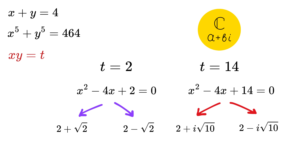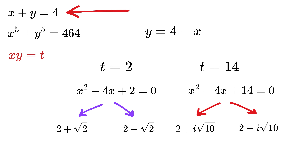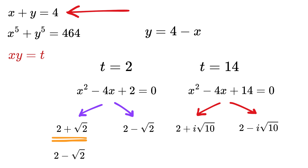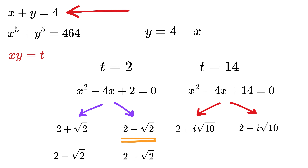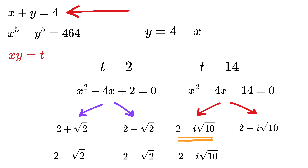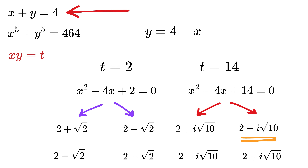Finding y is easy since y equals 4 minus x. For x equals 2+√2, y equals 2−√2. For x equals 2−√2, y equals 2+√2. For x equals 2+i√10, y equals 2−i√10. For x equals 2−i√10, y equals 2+i√10.